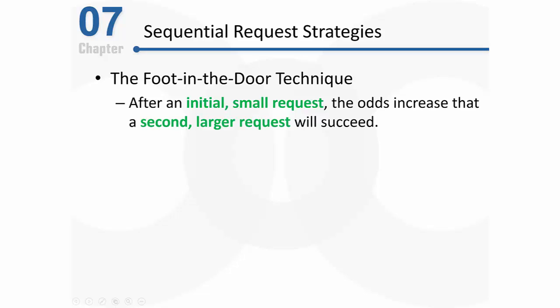In the real world it would work like this: I'd say, hey, I'm really strapped this month — would you mind loaning me $10? And you'd say, yeah, that's no big deal, here's $10. As you're getting the money, I'd say, you know, now that I think about it, $10 really isn't going to cover it. Is it all right if you give me $50 and I'll pay you back next month? According to the foot-in-the-door technique, you are more likely to comply with my request for $50 if I first asked you for $10.